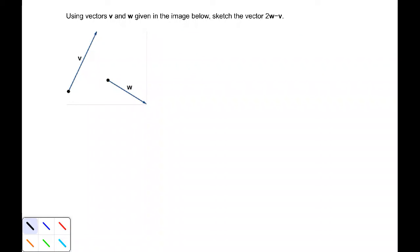Vector v has an initial point and goes up and to the right at a certain distance, or magnitude. We have vector w which goes down and to the right with a certain magnitude.